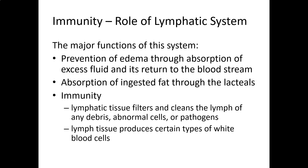Absorption of ingested fat is another role, and immunity is the other big role of the lymphatic system. Lymphatic tissue filters and cleans the lymph from debris, abnormal cells, and pathogens — it's like a giant filter. The lymph system can also produce certain types of white blood cells called lymphocytes, which are a cousin of monocytes. Those are the major roles of the lymphatic system.